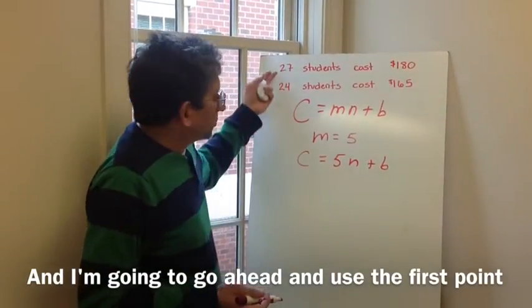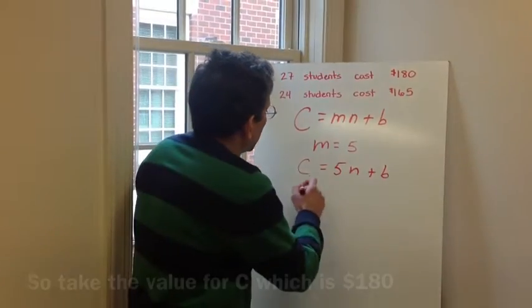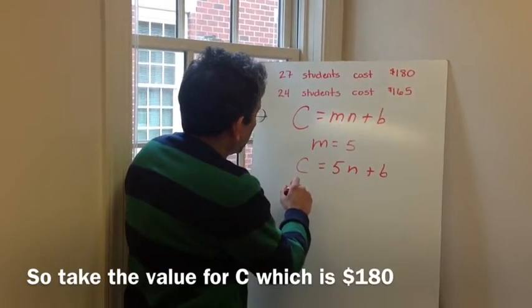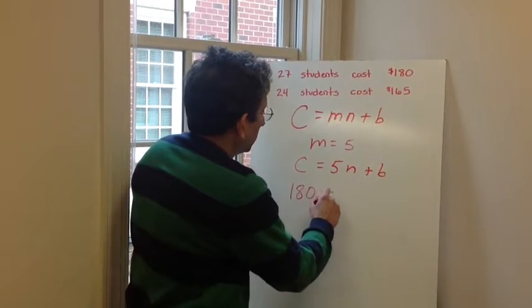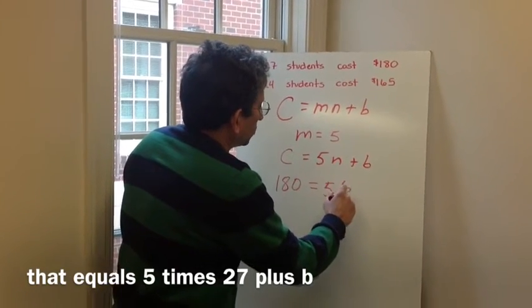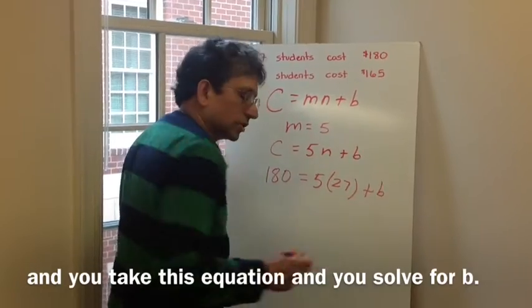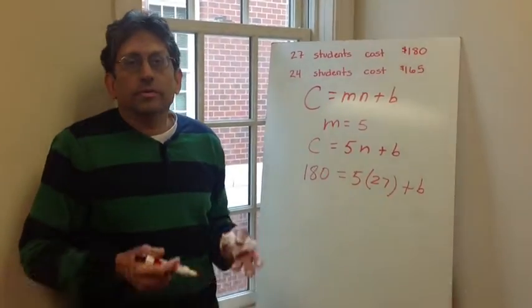I'm going to go ahead and use the first one, but you can just as easily use the second one. So take the value for c, which is 180, that equals 5 times 27 plus b, and you take this equation and you solve it for b.